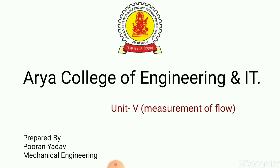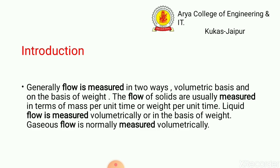Flow measurement is the process of measuring fluid in a plant or industry. Some flow measurement instruments used include flow meters, water flow meters, and magnetic flow meters. In general, flow is measured in two ways: volumetric basis and weight basis. The flow of solids is usually measured in terms of mass or weight per unit time. Liquid flow is measured volumetrically or by weight, and gaseous flow is normally measured only volumetrically.